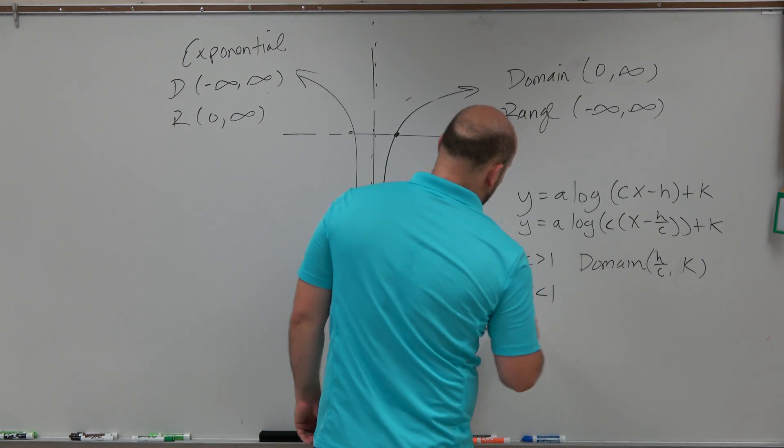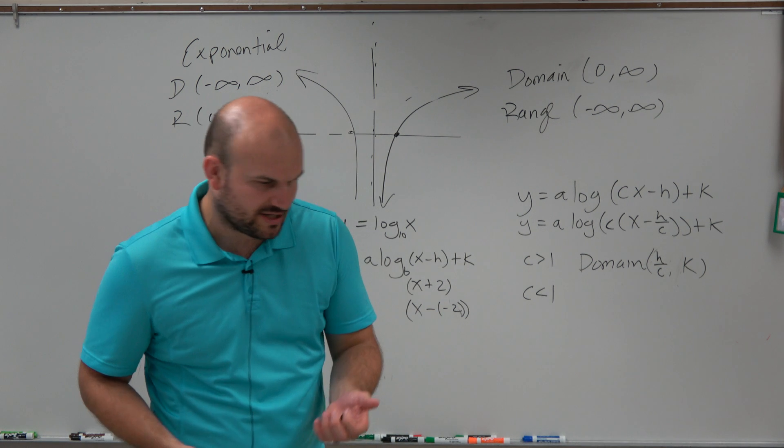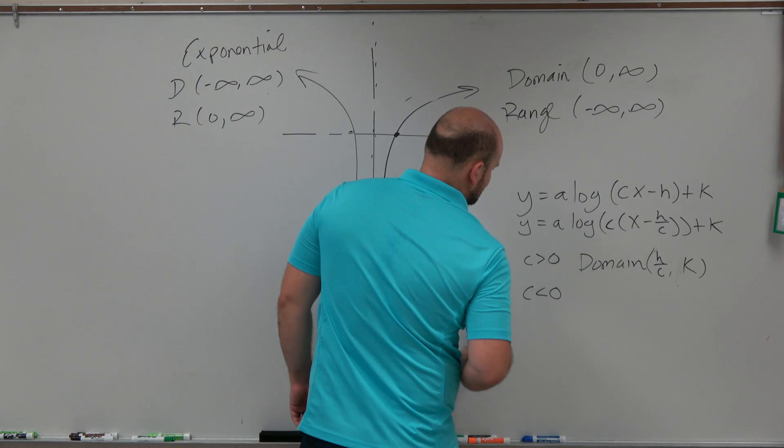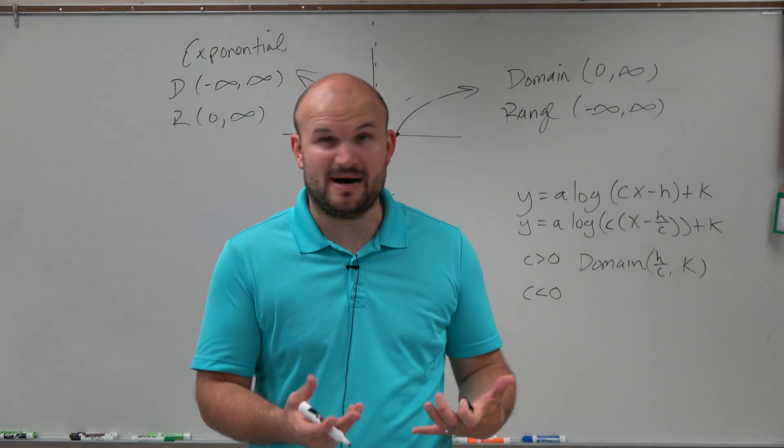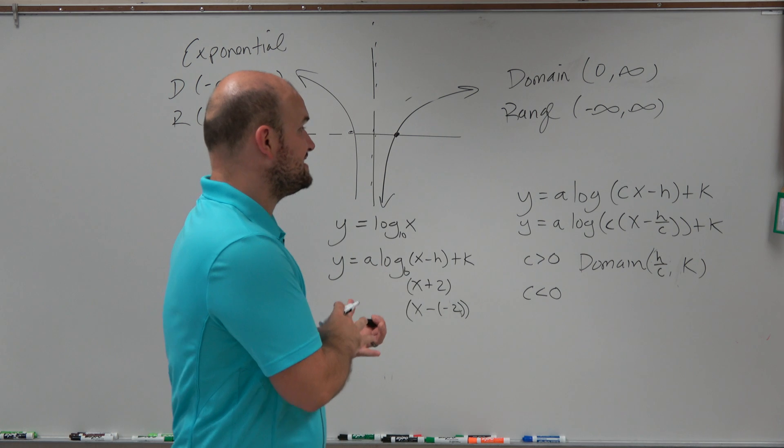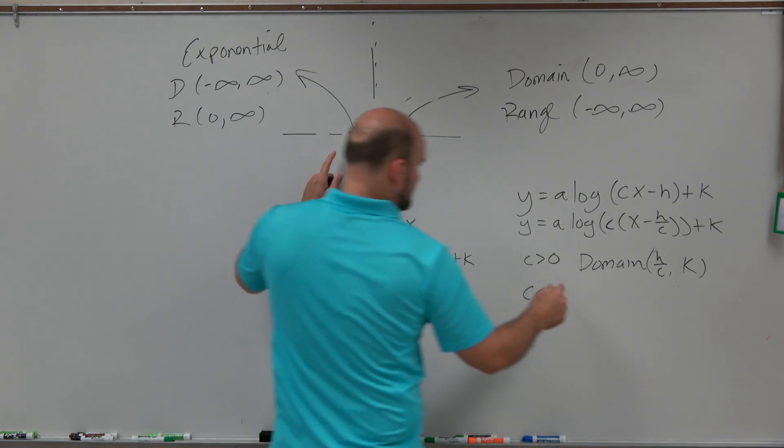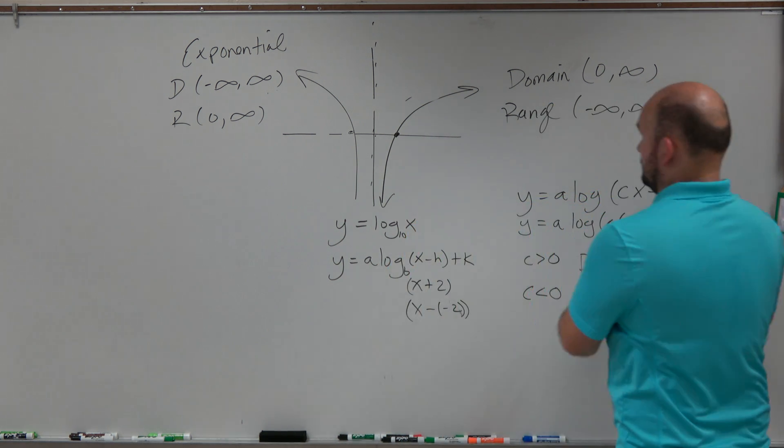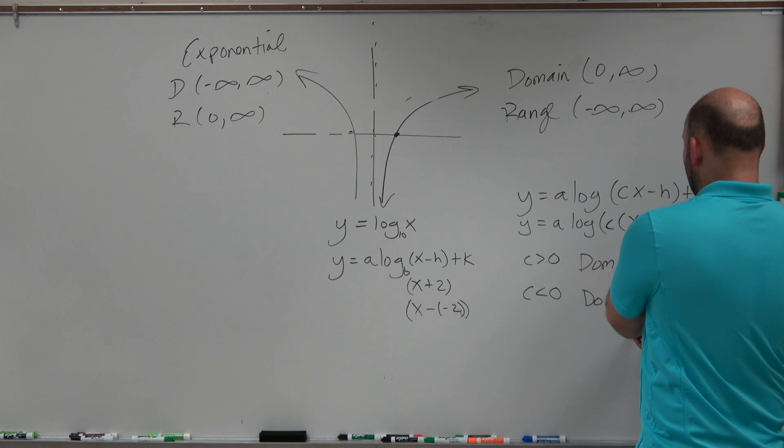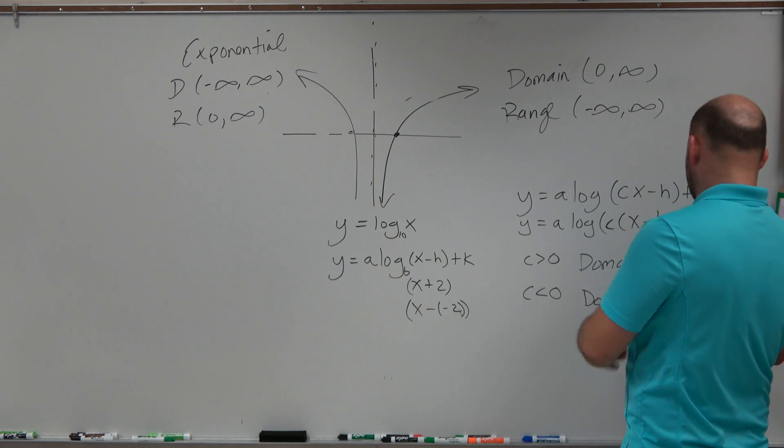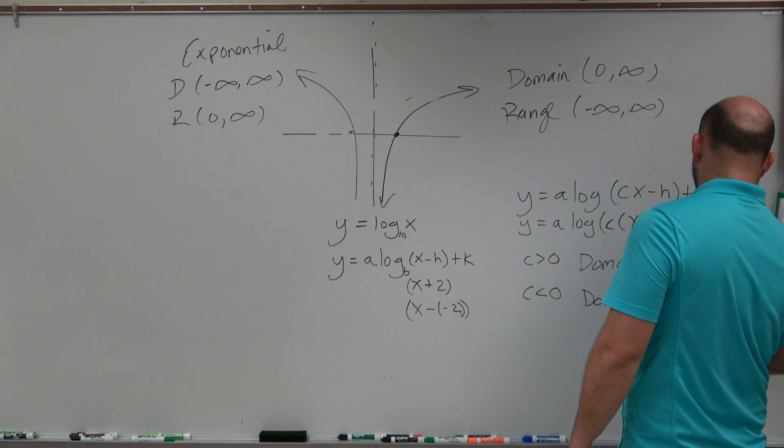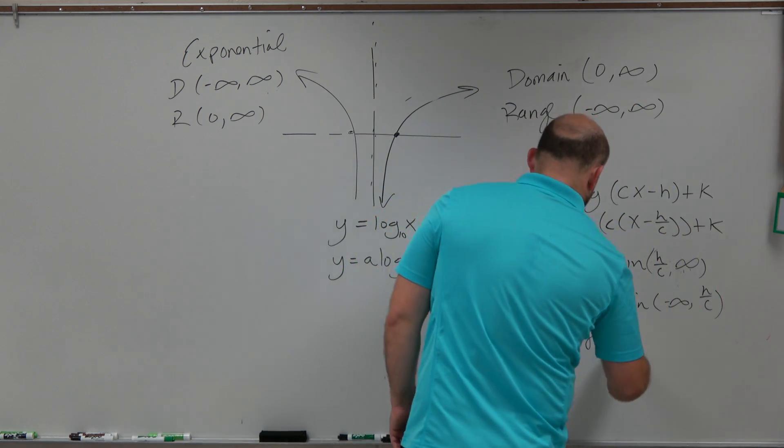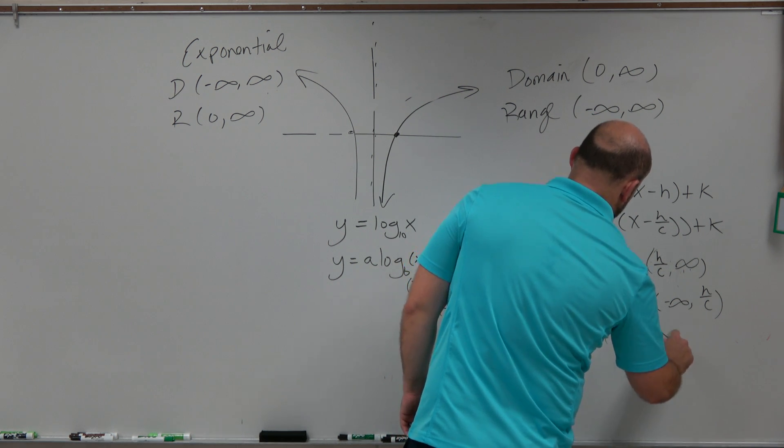However, if c is going to be less than 1, and obviously, ladies and gentlemen, sorry, less than 0, greater than 0, not 1, greater than 0, that means it's positive. If c is less than 0, now my domain, you can see here, is going to be from negative infinity to whatever your value of h over c is. And the range is still going to be negative infinity to infinity.